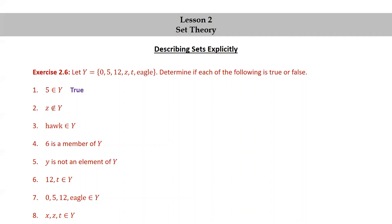Okay, 5 in Y is true. 5 is an element of the set Y. Z not in Y is false because Z is in Y.